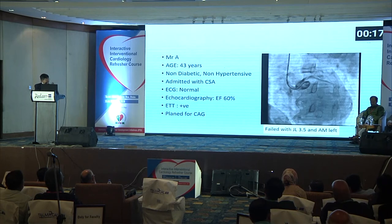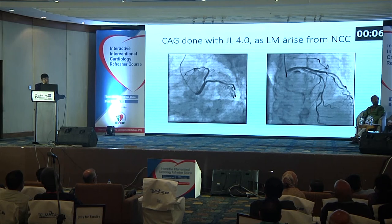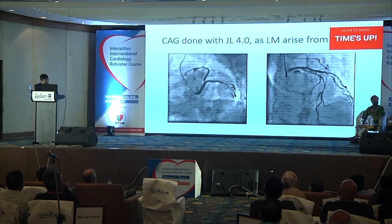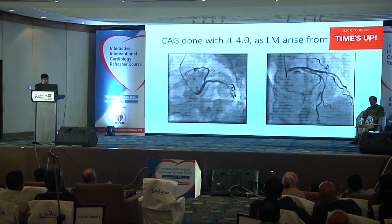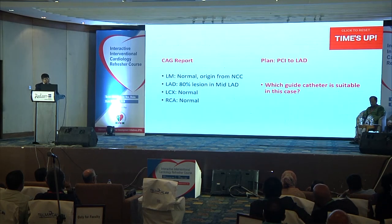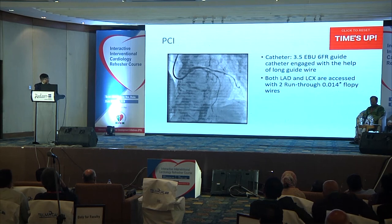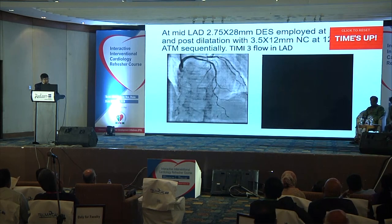In the next case, the normal LCA left main could not be cannulated with different types of catheters, so we used a JL 4 catheter to cannulate the left main. The left main arose from the non-coronary sinus. The LAD had 80% stenosis, so we used a 3.5, 6-French guide catheter, and with the help of a stiff wire inside the catheter, we managed to cannulate the LAD, and successful PCI was done through the LAD.